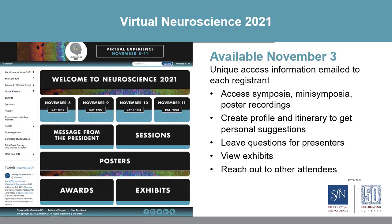Beginning November 3rd, all registrants will receive access to the virtual event website through email. Once you log in with your unique credentials, you can access all on-demand content. This includes symposia and mini-symposia presentations, poster recordings and slides, and viewing exhibits and graduate school booths.